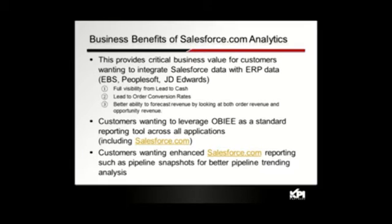The second major benefit is a better — in some cases critical — ability to forecast revenue. Many customers have a recurring revenue model, such as a software company with recurring maintenance contract revenue plus opportunity revenue from new deals. The only way to get a complete picture of expected revenue at the end of the month or quarter is to look at both systems together; looking only at orders misses pipeline, and looking only at pipeline misses orders. We also see customers who have standardized on OBIE as a reporting tool and want to use it across all applications including Salesforce.com.